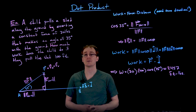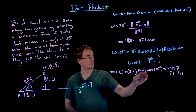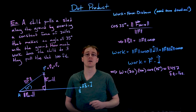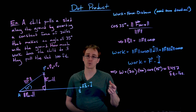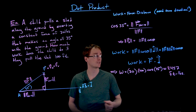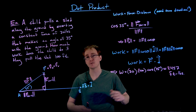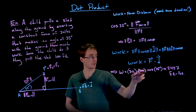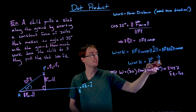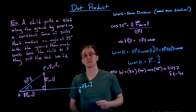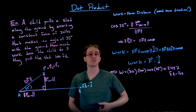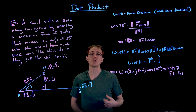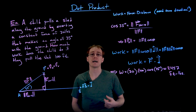When using the US measurement system, force is measured in pounds, distance in feet, and the product for work gives us foot-pounds. In the metric system, force is measured in newtons and distance in meters, so the work unit is newton-meters, which are also referred to as joules.